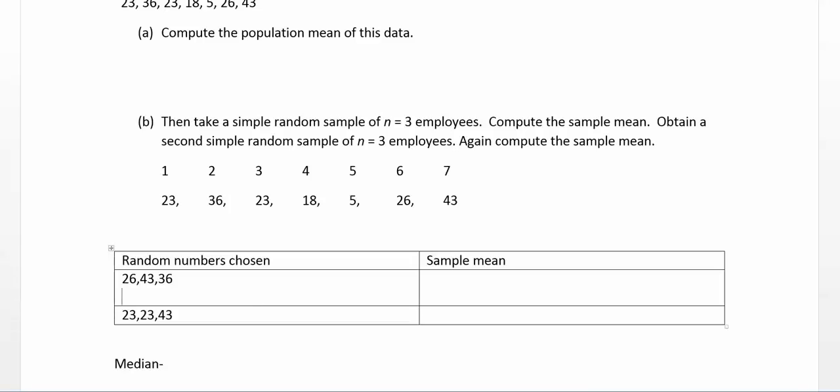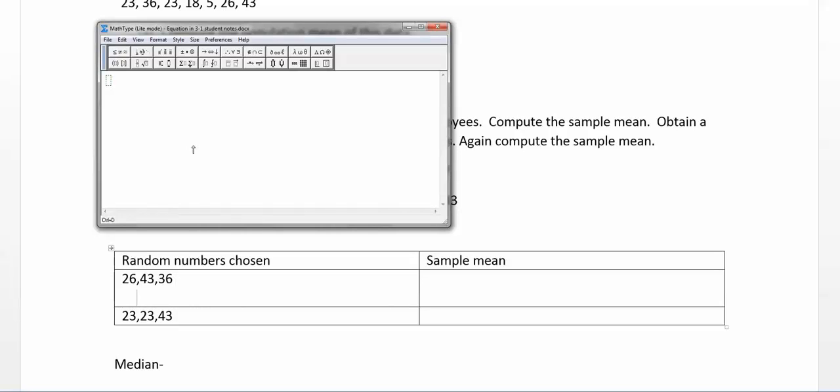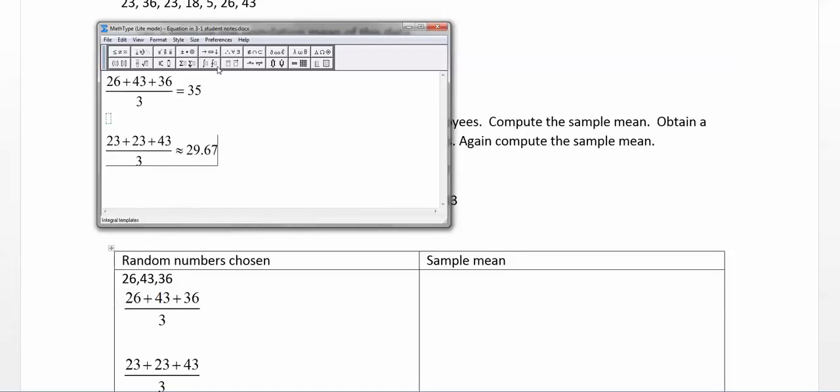And so we're going to find the arithmetic means of these samples, which goes back to add them up and divide. So I want 26 plus 43 plus 36 divided by 3. I'll calculate that in a second. And then for the other one, I want 23 plus 23 plus 43 divided by 3. So when I typed into the calculator, I got an approximate mean of 35 exactly for the first one and 29.67 for the second one. Later on, we're going to come back and talk about what these numbers have to do with the actual mean of the population.